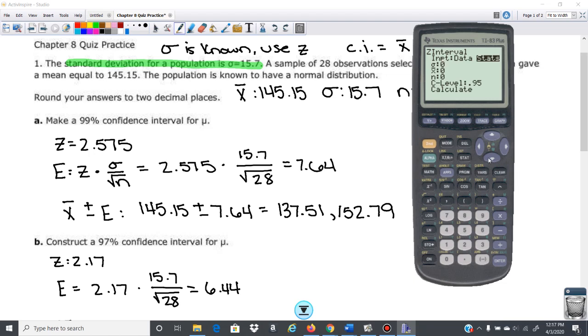You're going to enter your standard deviation. That's your population standard deviation. So that's 15.7 given in the problem. Your x̄ is 145.15, and then n is our sample size, and that is 28.